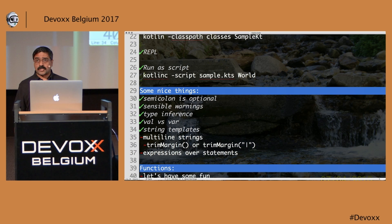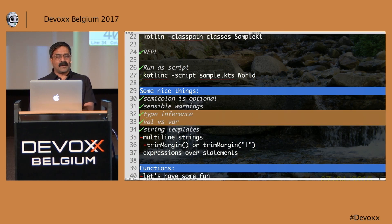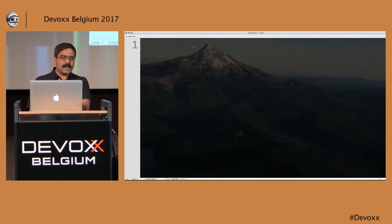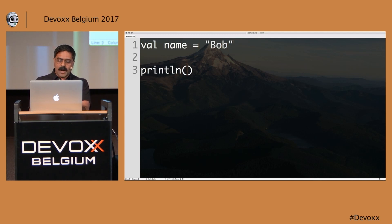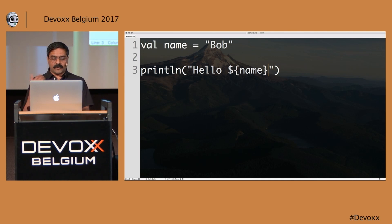One of the things you can do is nice string manipulation and string templates. If you're used to Groovy, the syntax here is very similar. So I have a name equal to 'Bob', and I want to print 'Hello, Bob'. I can say 'Hello, $name' right there. You can see it says 'Hello, Bob'. You don't have to use curly braces for a simple variable, but I'd encourage you to use them for more complex expressions.